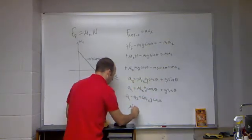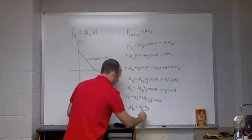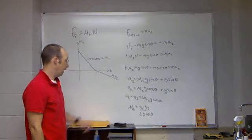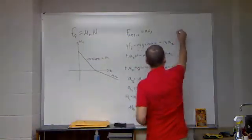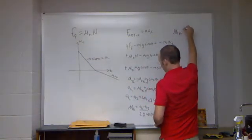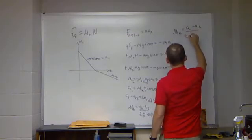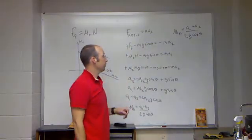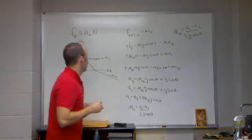So I get mu k equals a1 minus a2 over 2 g cosine theta. And you'll see this has no units right here. Let me write it up here. mu k equals a1 minus a2 over 2 g cosine theta. The top has units of acceleration and so does the bottom, so mu k has no units, which is the way it's supposed to be.